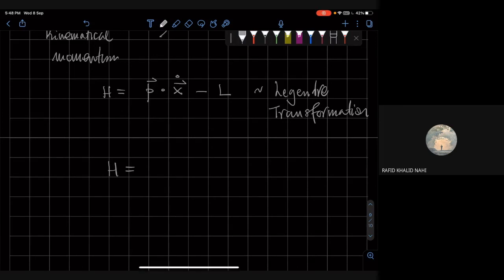And if you do it, one line of algebra, it gives you 1 over 2m. Instead of the momentum, you have p minus q over c a, the kinematical momentum. And then the potential is q phi. So this is my Hamiltonian.